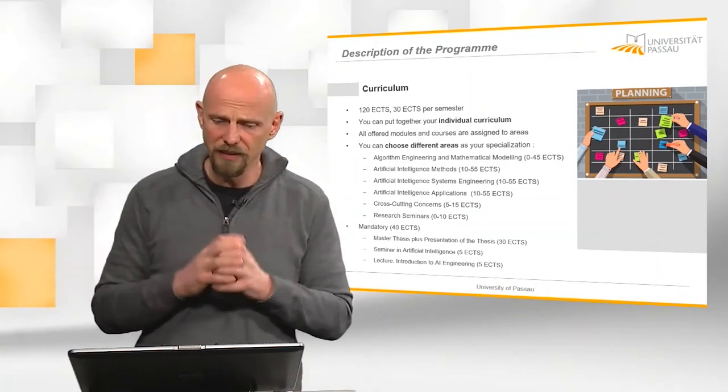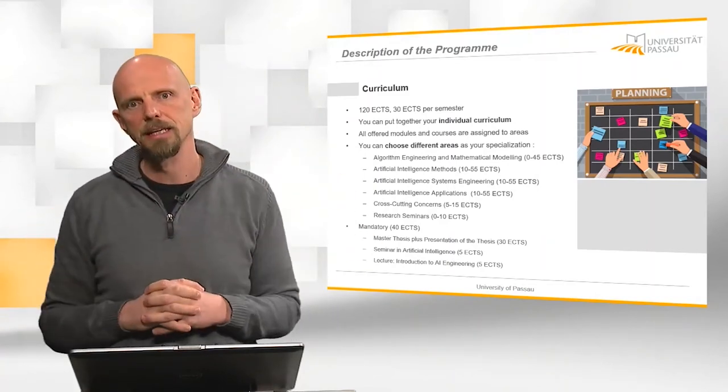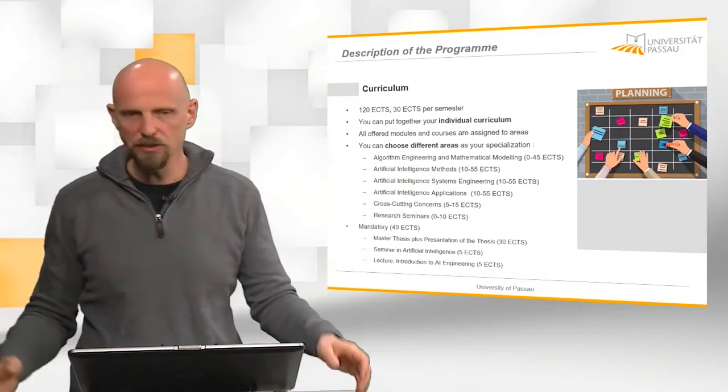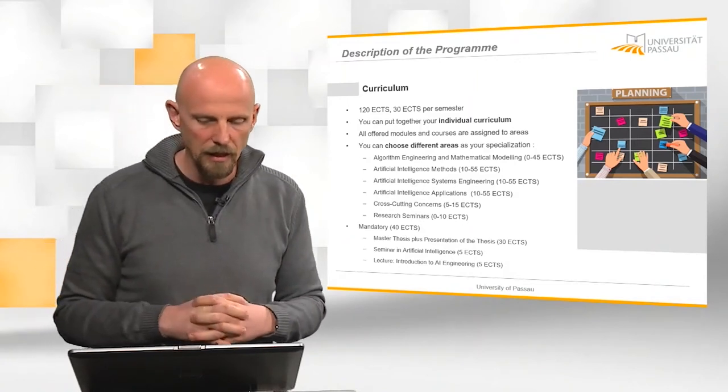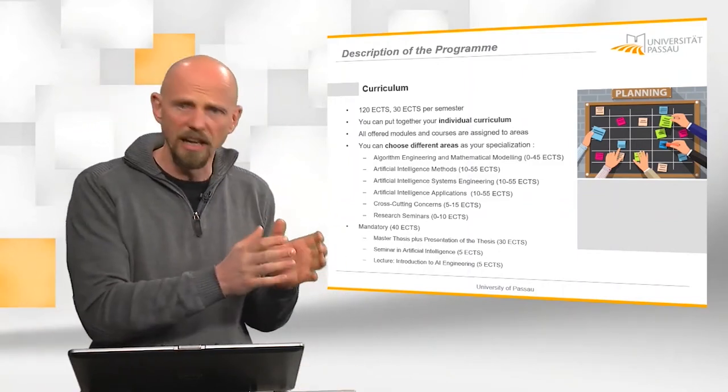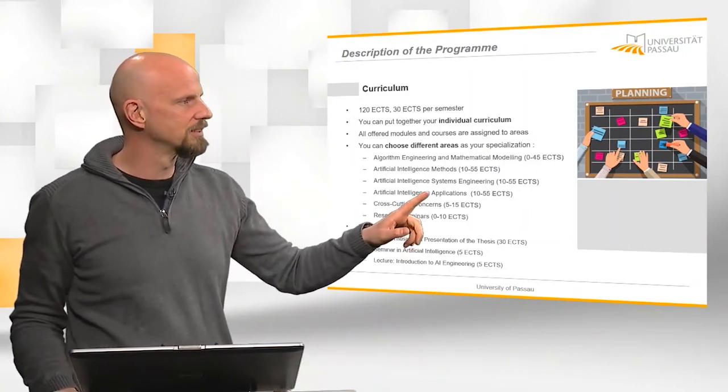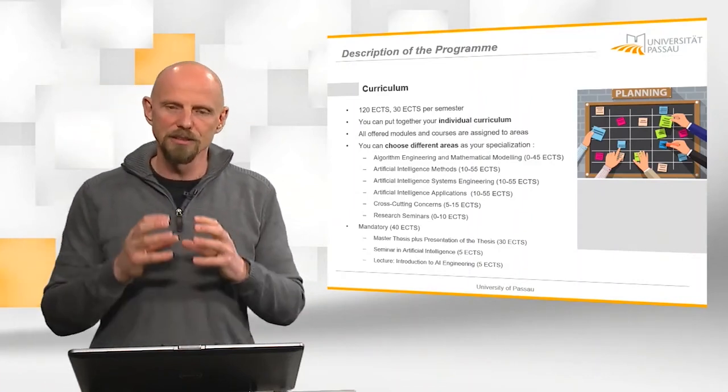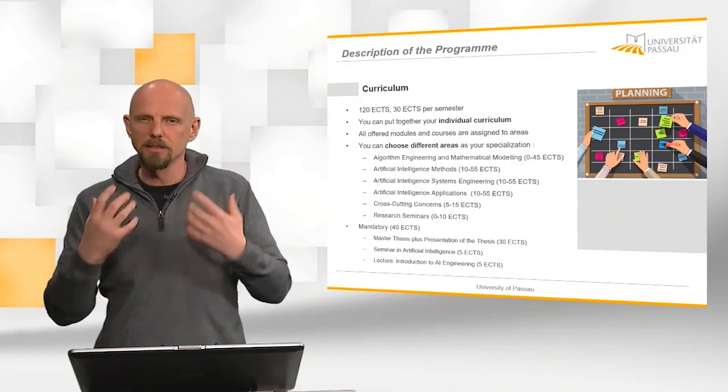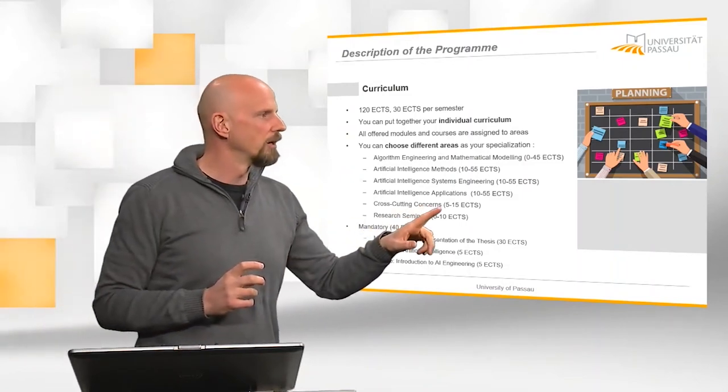So we have at the very base, we have this algorithm engineering and mathematical modeling, where we learn foundations of math and also computer science that are necessary for focusing more on the algorithmic part of AI. Then we have artificial intelligence methods in the range from 10 to 55 ECTS. So 10 is minimum and maximum you can make in this area is 55 ECTS that focus on AI methods, neural networks, machine learning, logics, all those kinds of things. Then one subject is artificial intelligence systems and systems engineering, where it is the question on how we can build or what is the engineering process? How can we build those systems and how can we make certain guarantees that the system then fulfills what we defined in the requirements before?